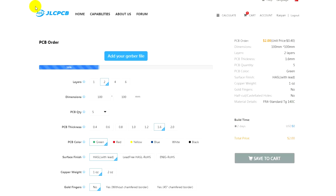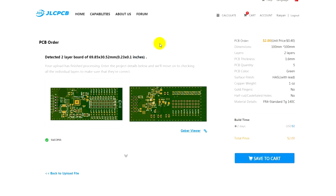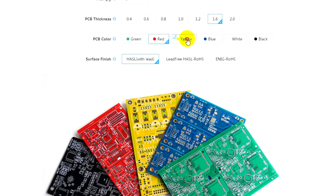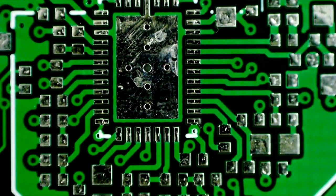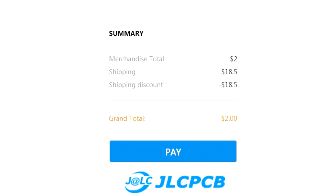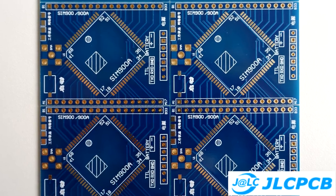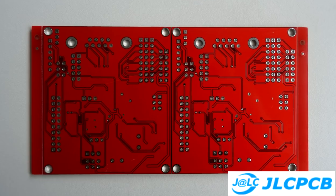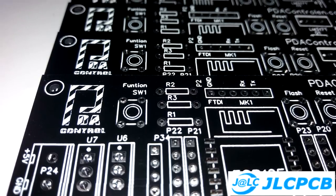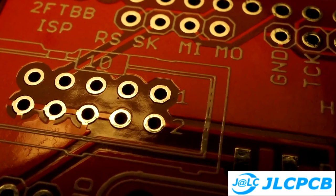On this website, you can order printed circuit boards of any complexity, with prices from $2. There is a very large selection of colors. The quality of production is at the highest level. By the way, you will get free shipping for the first order. With the JLCPCB service, your homemade devices will look like factory ones. A link to the JLCPCB website can be found in the description.